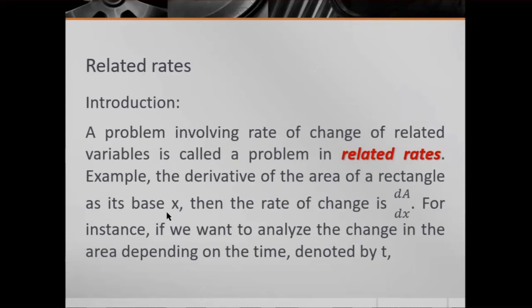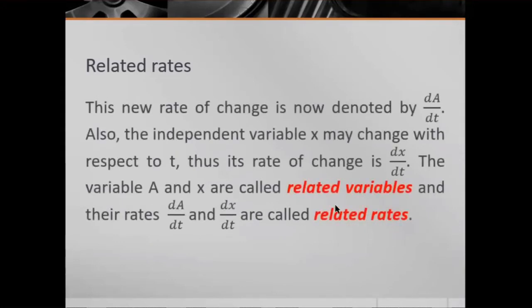For example, the derivative of the area of a rectangle with respect to x gives the rate of change dA/dx. If we want to analyze the change in area depending on time t, the new rate of change is dA/dt. Also, the independent variable x may change with respect to t, so its rate of change is dx/dt. The variables A and x are called related variables, and their rates dA/dt and dx/dt are called related rates.